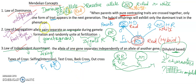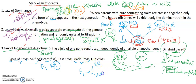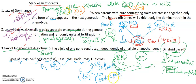Agar hum cross ki baat karein, to kabhi kabhi hum use back cross bolte hain. Back cross matlab — wapas se F1 ka hum kisi se cross kara rahe hain, ho sakta hai hum homozygous dominant se karayen, ho sakta hai hum homozygous recessive se karayen. Jab F1 means heterozygous progeny ka cross homozygous dominant se karaenge to usko out cross kehenge. Back cross do tarike se ho sakta hai: out cross aur test cross. Test cross hamesha hum log homozygous recessive se karate hain — yeh cross bahut hi important hai, test cross kai baar question paper mein pooch liya jaata hai. Inter cross ka matlab aap ek line yaad rakhein: selfing.